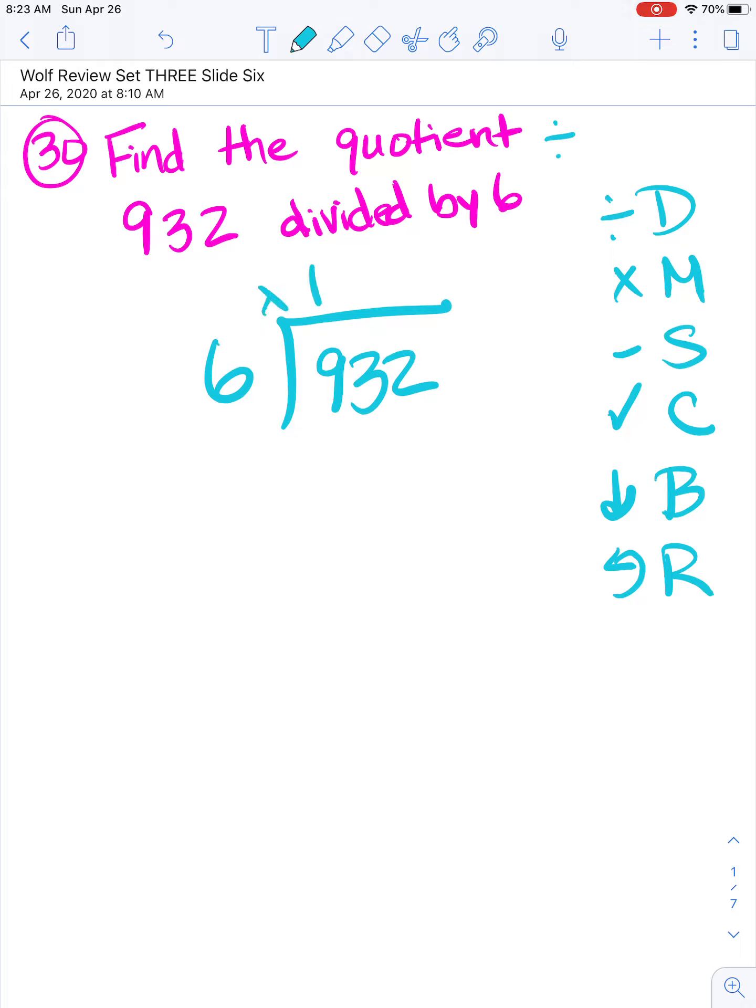First step, divide. How many times can 6 go into 9? It can go in one time. 6 times 1 is 6. 9 minus 6 is 3. Multiply and then subtract. Now I check: is my difference, the 3, smaller than my divisor, the 6? It is, which means I went in enough times. So now I bring down.